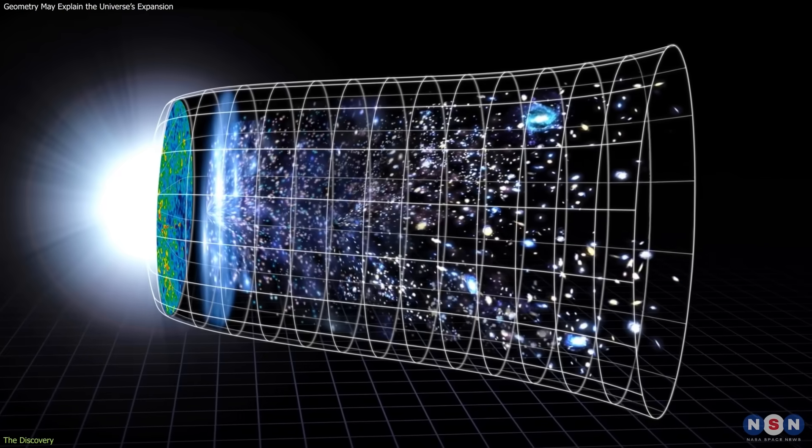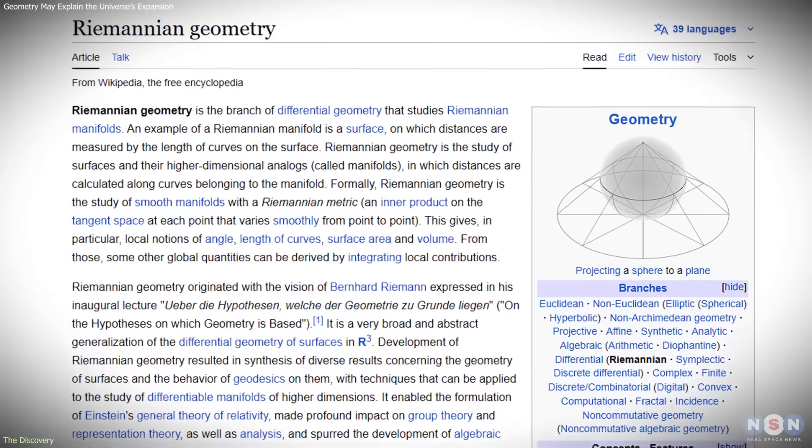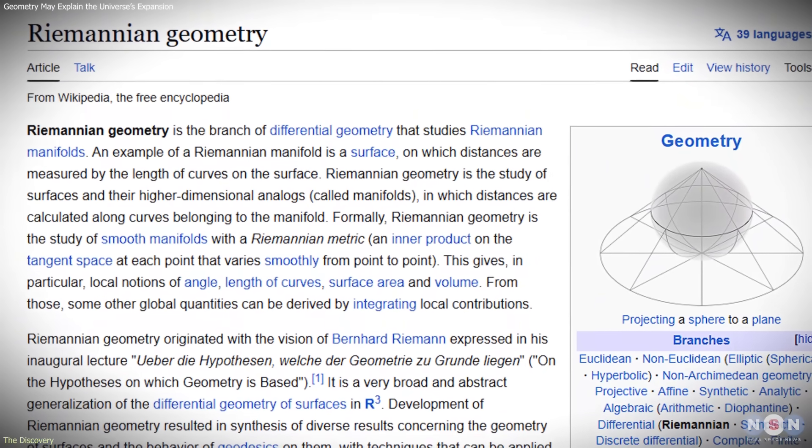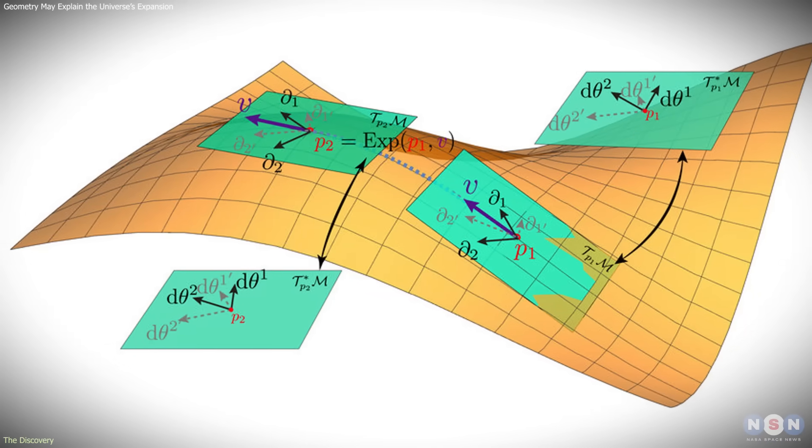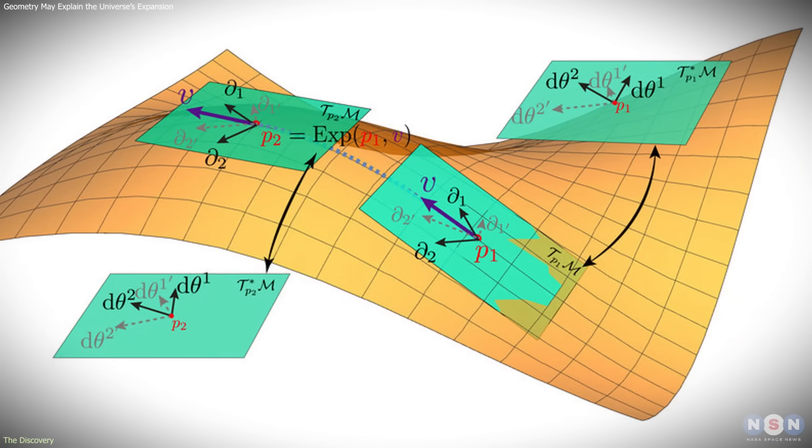The standard model of cosmology relies on Riemannian geometry, the mathematical framework behind Albert Einstein's general relativity. In it, measurements of distance and time are the same no matter the direction or motion of the observer.